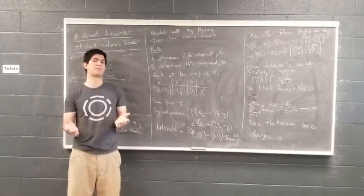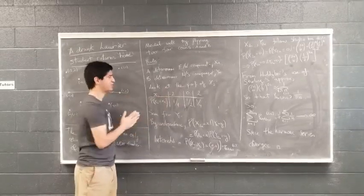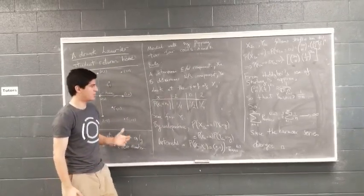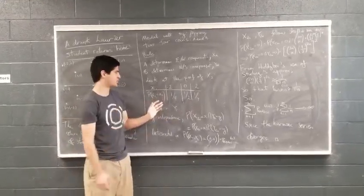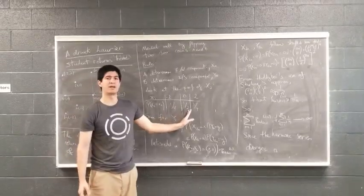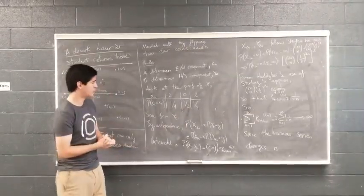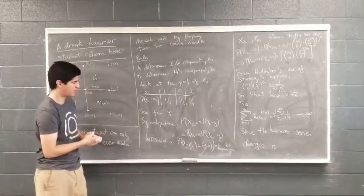You can take a look at what happens after two flips in the x direction. After two flips of the coin, the student has a binomially distributed east-west component, where he has probability a half of being back at the original origin coordinate, and a quarter of being away from it for each direction.